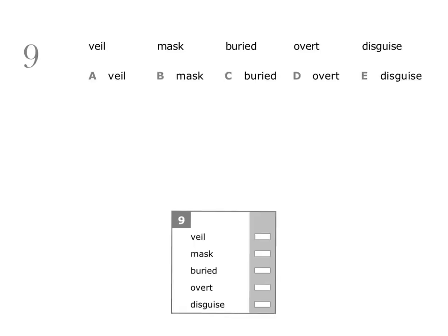Question nine: veil, mask, buried, overt, disguise. Three of these words are related in some way, and we need to find the two words that do not go with these three words. We'll start by looking at veil.